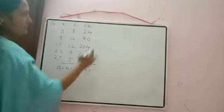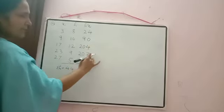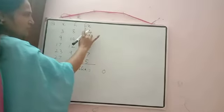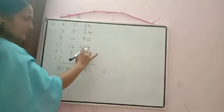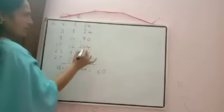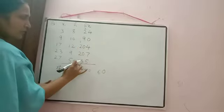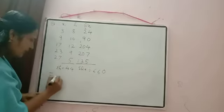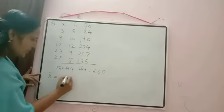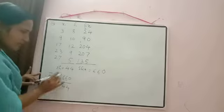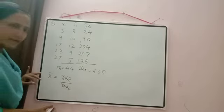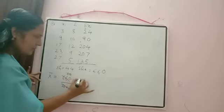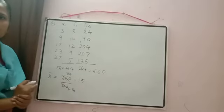Now calculate Σfᵢxᵢ: 4+4=8, 8+7=15 (units: 4+0+4+7+5=20, carry 2), tens: 2+2+9+0+3+1=... Computing directly: 24+90=114, +204=318, +207=525 — let me recompute: 24+90=114, 114+204=318, 318+207=525, 525+135=660. So Σfᵢxᵢ = 660. x̄ = 660/44. Divisible by 11: 660/11=60, 44/11=4. So x̄ = 60/4 = 15.